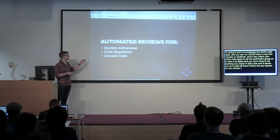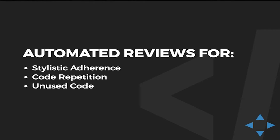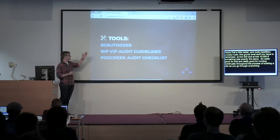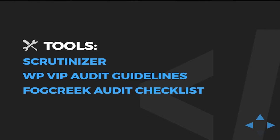Automated reviews are really good for the grunt work — the stuff that developers don't really like checking for, like stylistic adherence. You can apply patches automatically instead of writing that code. Code repetition, unused code — this grunt-level stuff that you'd have to remember at line 500 and at line 10,000 if something was exactly the same. Really good for that and for running continually throughout the process of building a site.